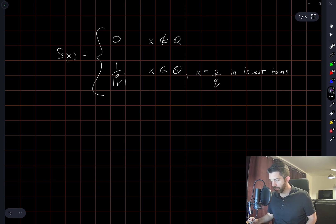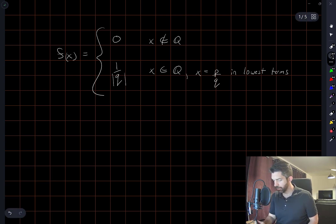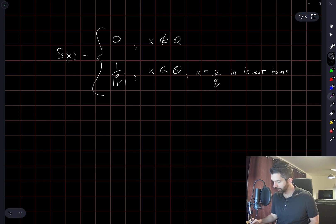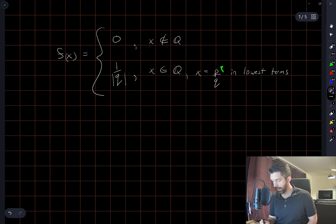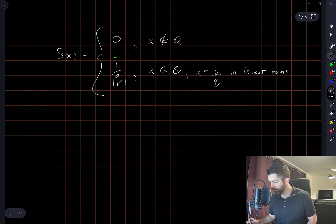Our function is again going to be defined differently depending on whether x is rational or irrational. If x is irrational, we set the value of the function equal to zero. If x is rational, that means it can be written as a fraction p over q in lowest terms, and we set the value of the function in that case to be one over the absolute value of q — so one over the value of the denominator.